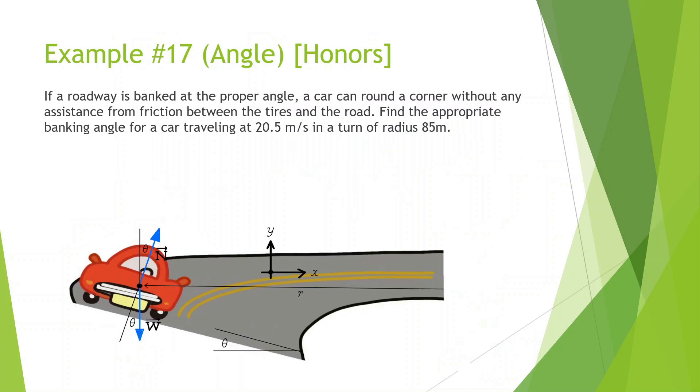Let's move on. I think this is the last one we're going to do. If a roadway is banked at a proper angle, a car can round a corner without any assistance from friction between the tires and the road. Find the appropriate banking angle for a car traveling at 20.5 meters per second in a turn radius of 85 meters. So 85 meters. We're looking for what this angle is. We know the force of gravity is just mg. We know that the normal force in the y direction is also mg, and we know force normal in x is equal to mv squared over r. So let's figure out a few things. We should know tan inverse of fn of x over fn of y will give us this theta that we're looking for.